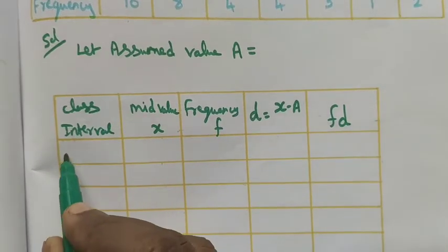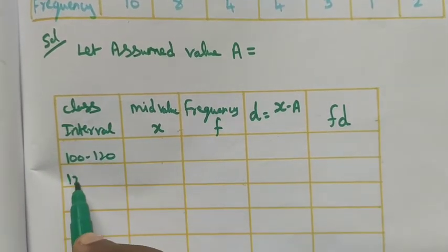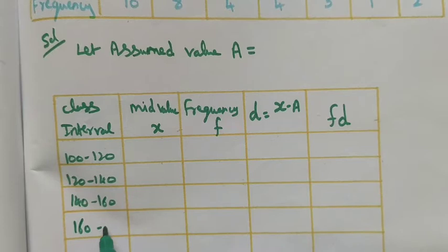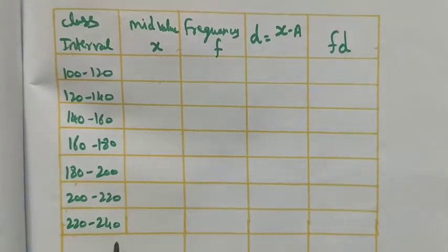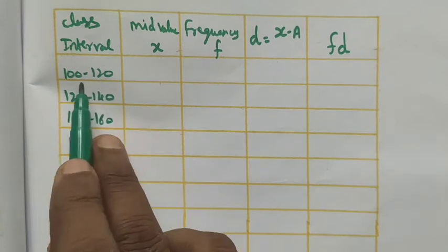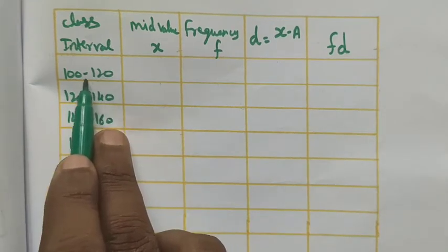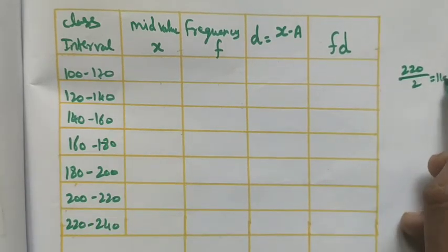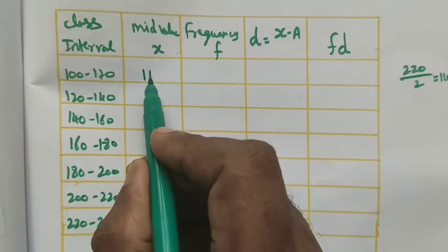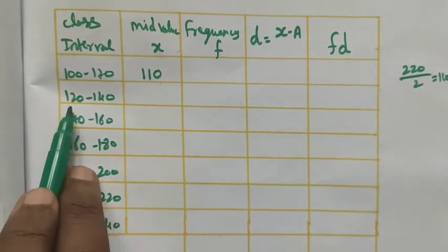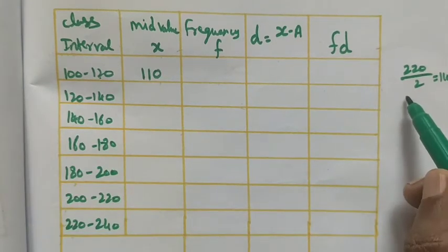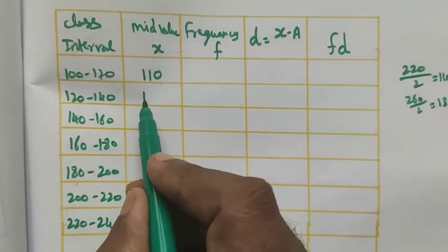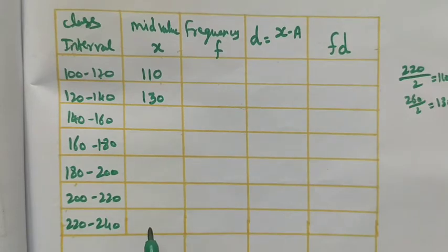Enter the class intervals: 100-120, 120-140, 140-160, 160-180, up to 220-240. To find the mid-value, add the lower and upper class limits and divide by 2. For the first interval: 100 + 120 = 220, divided by 2 = 110. For the second: 120 + 140 = 260, divided by 2 = 130.